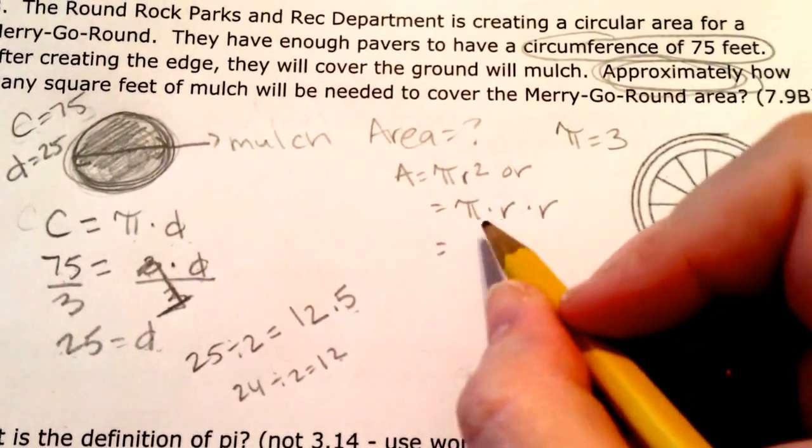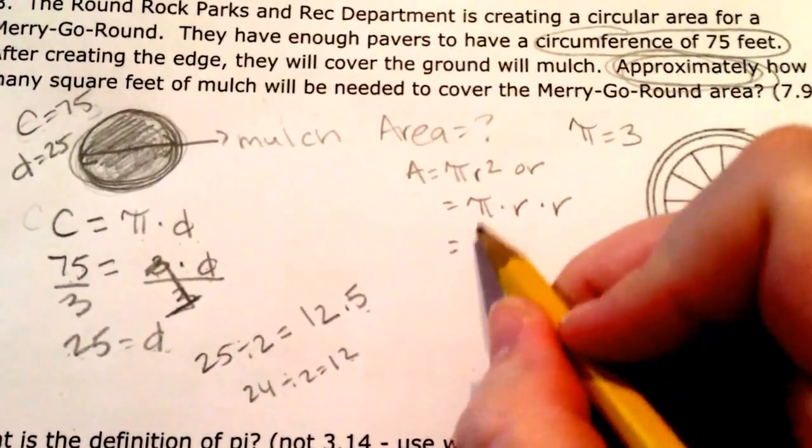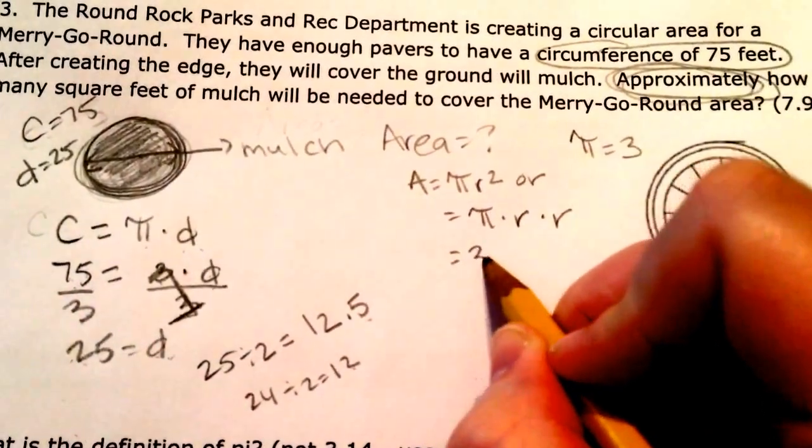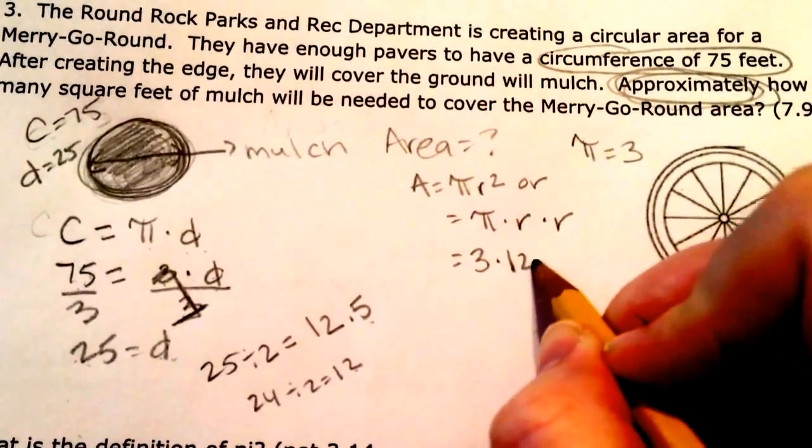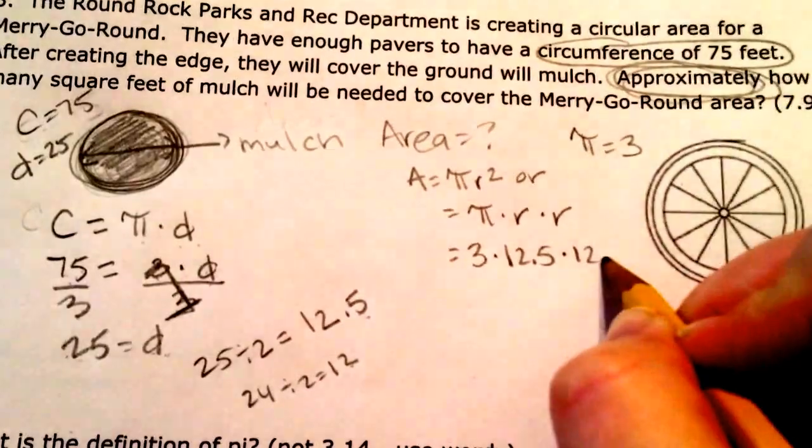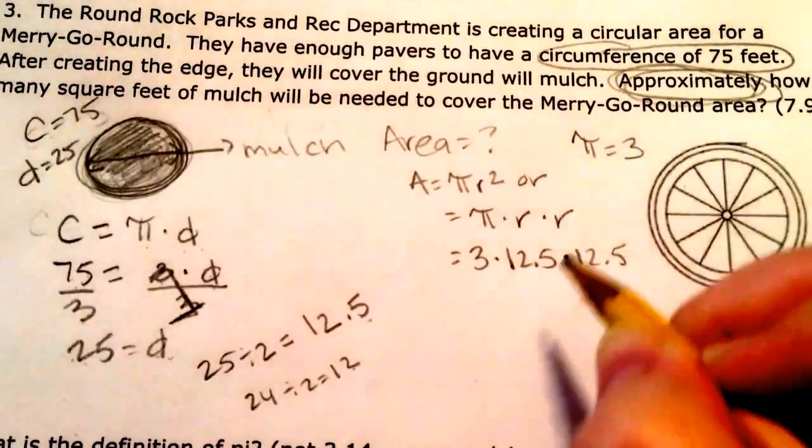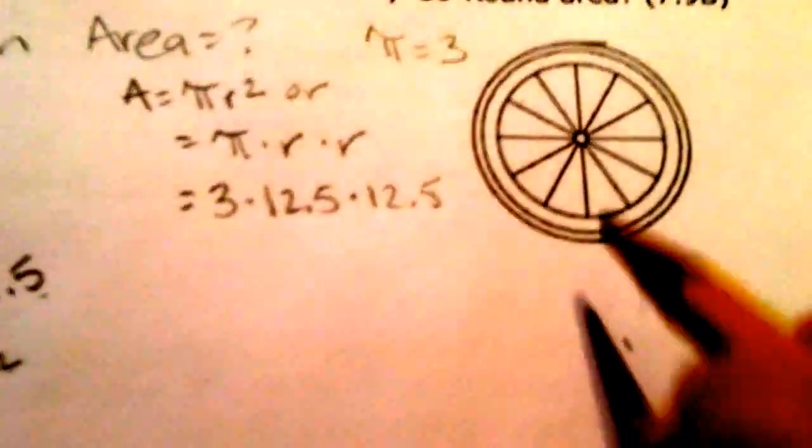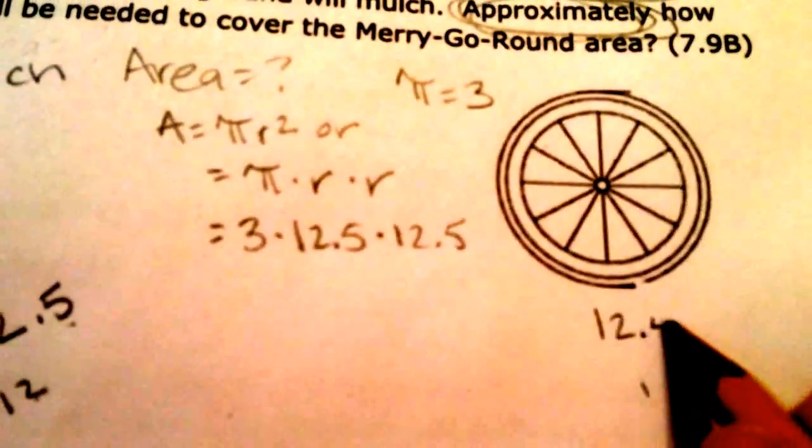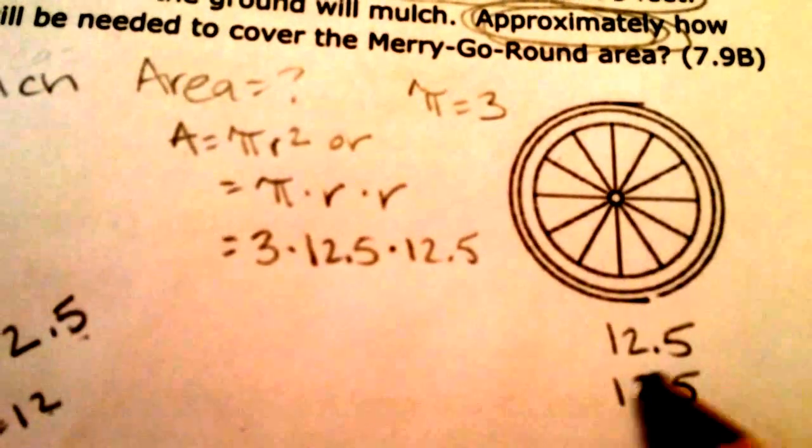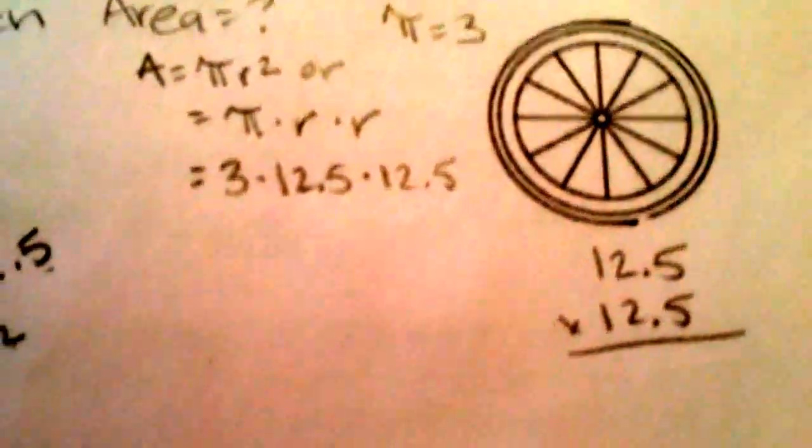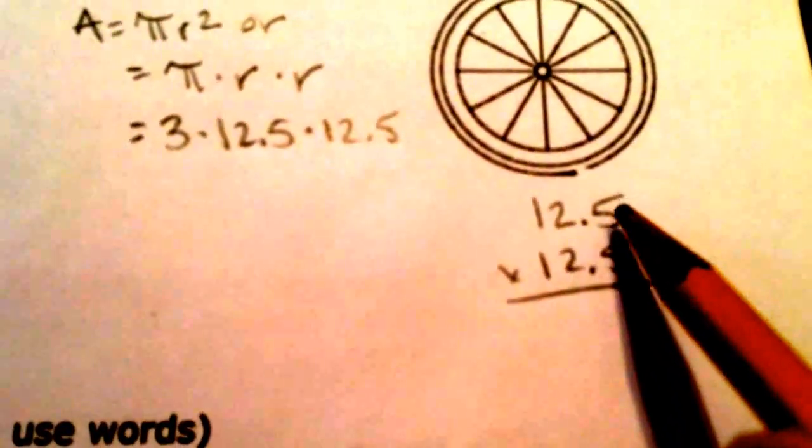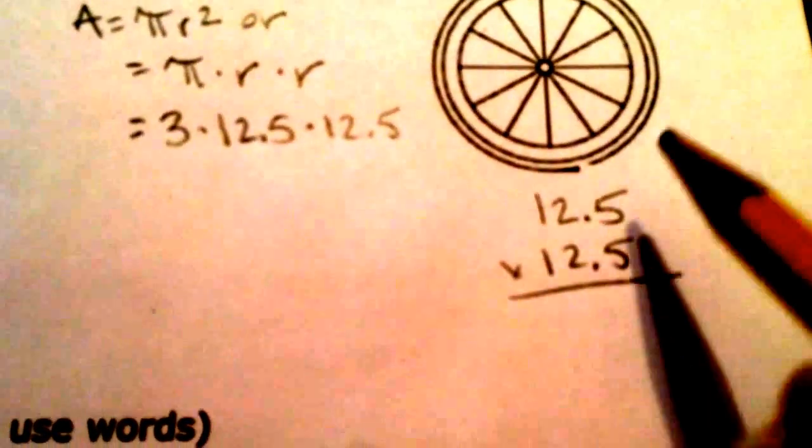So we're going to come over here, approximately again. So again, pi is 3 times 12.5 times 12.5. Alright, I know that looks kind of scary, but we're going to do it. Alright, so we're going to come over here. 12.5, 12.5. Alright, so take them just one step at a time.